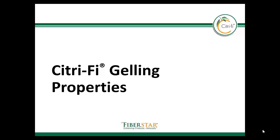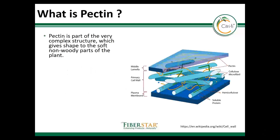Let me start with some background information on pectin. Pectin is located in plant cell walls and part of a very complex structure. Especially the soft, non-woody parts of plants are high in pectin, where it helps with keeping the shape and moisture control.